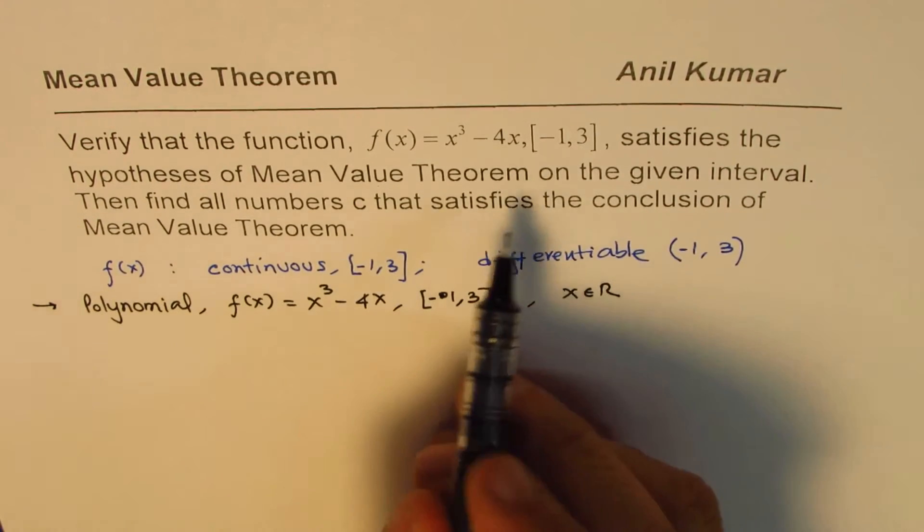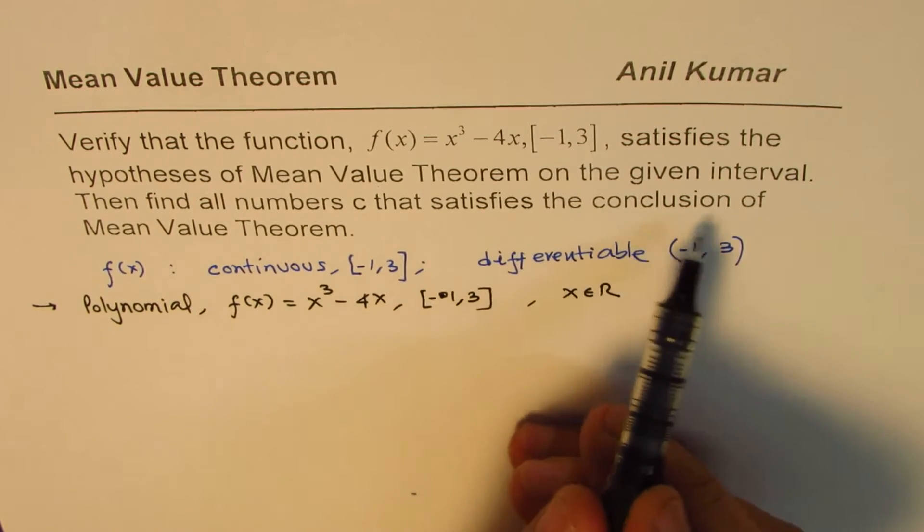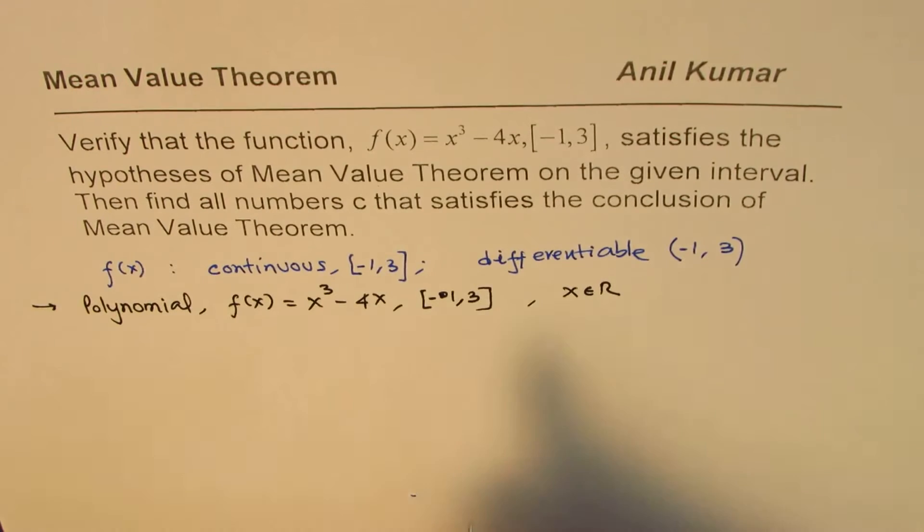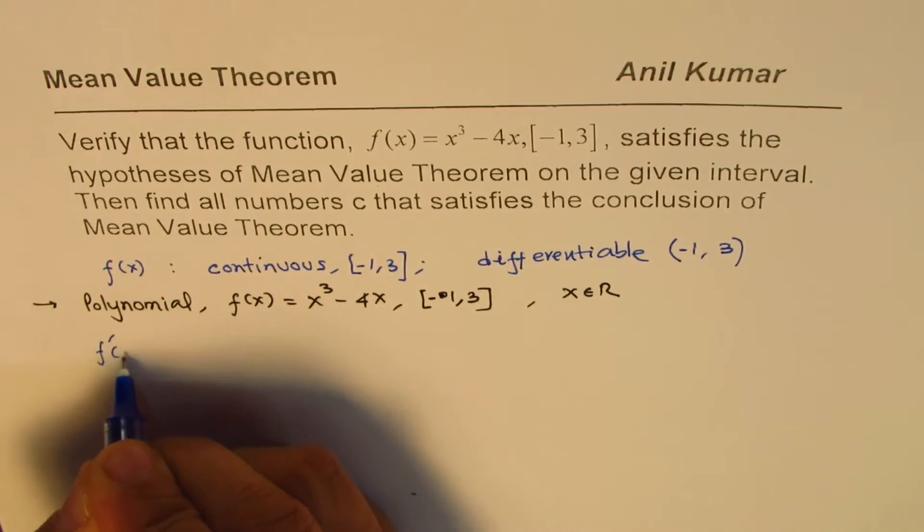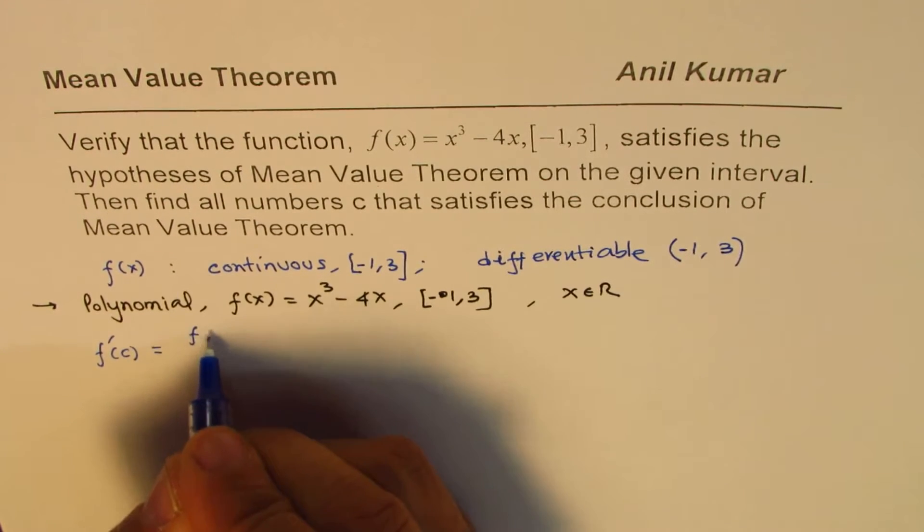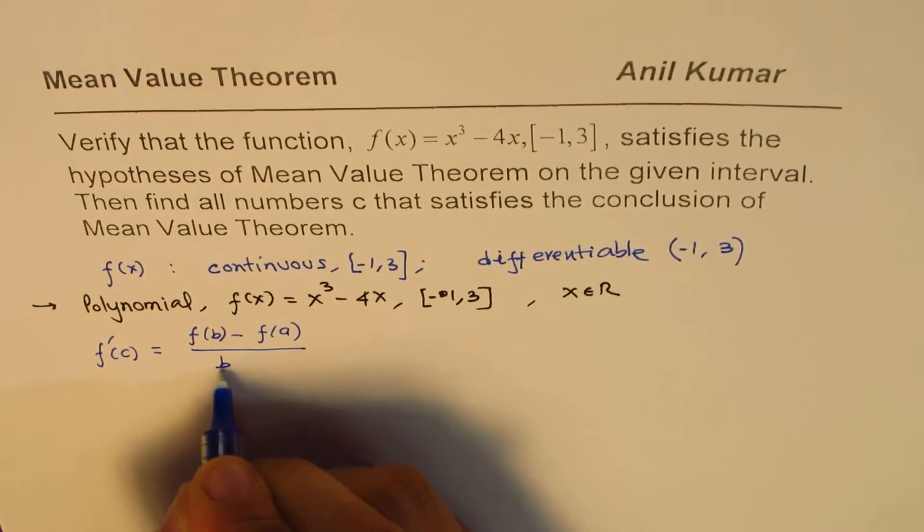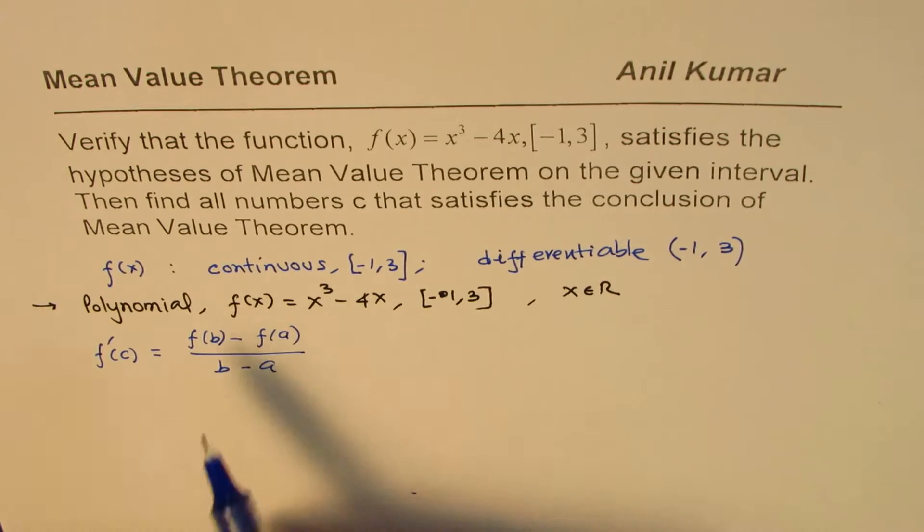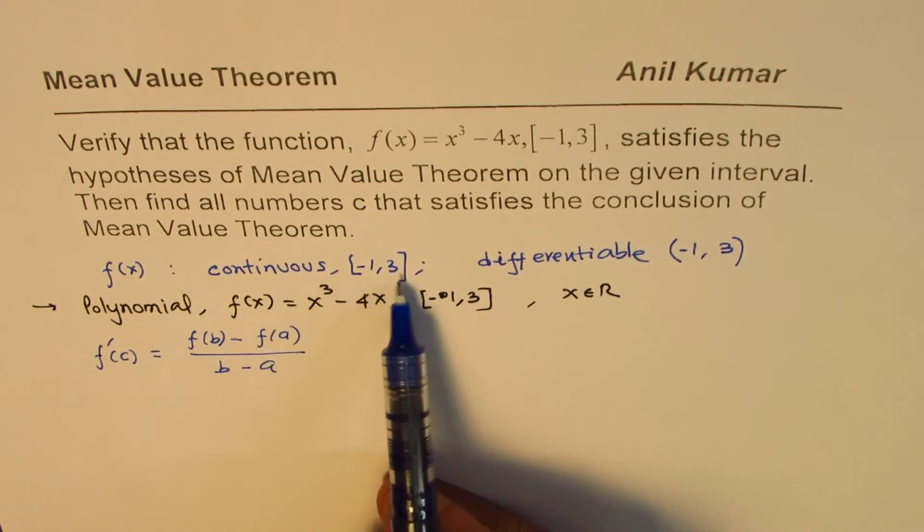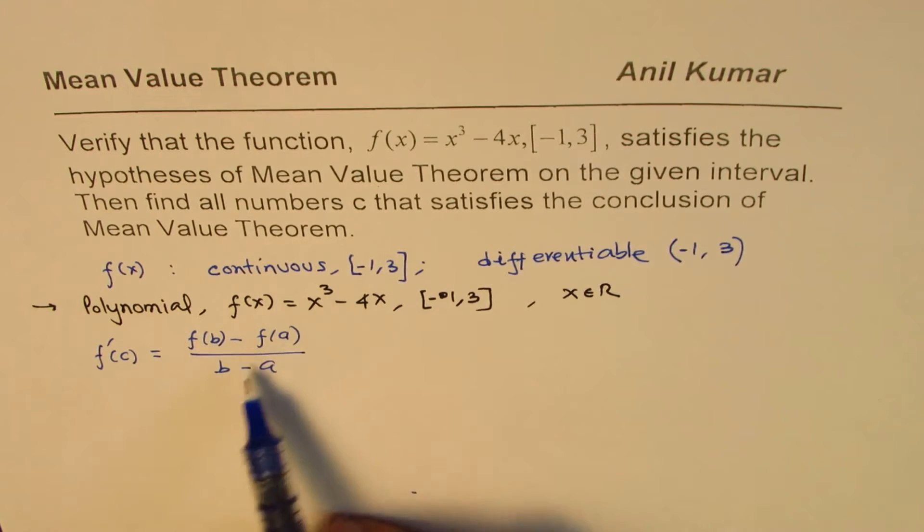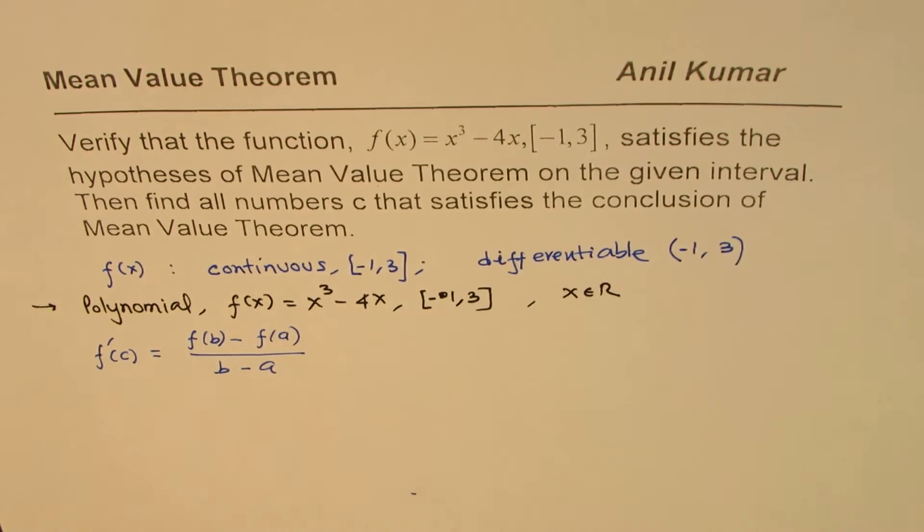Now, second part of the question is, then find all numbers c that satisfies the condition of mean value theorem. Now, what is the condition of mean value theorem? The condition is that f dash c should be equal to f of b minus f of a divided by b minus a. So, that is the condition. Sometimes we say that the instantaneous rate of change at some point within the open interval is same as the average rate of change between the two points in the interval.